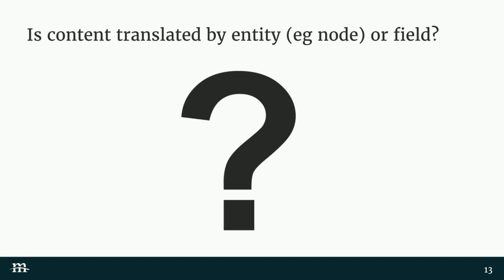Going back to Drupal 6, it was always at the entity level. What this meant was, if you had Spanish content and some English content, you'd have a node for each, and they would each have an NID. That worked out okay. But then in Drupal 7, they introduced entity translation, which made things a little bit easier, because you were able to have a single node with multiple translations.